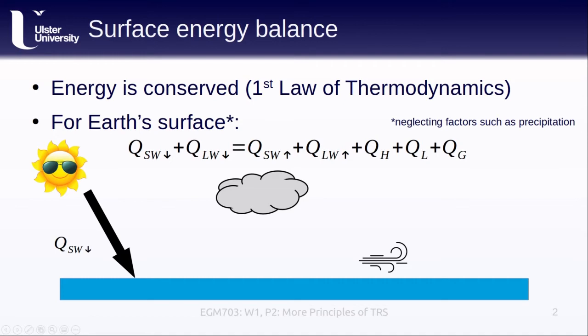Some part of that incoming shortwave radiation is reflected by the surface, which gives us the shortwave outgoing radiation, which is Q_SW with an up arrow. Next, we also have the longwave incoming radiation. This is thermal radiation that is, for the most part, emitted by the atmosphere and especially by clouds. We have the longwave outgoing radiation, which is the thermal radiation that is emitted by the Earth's surface.